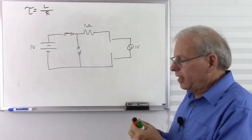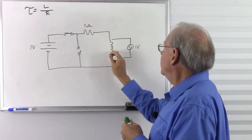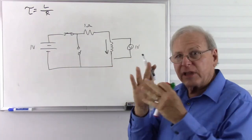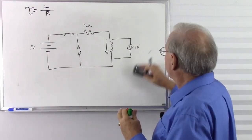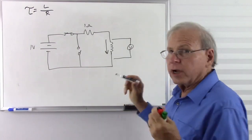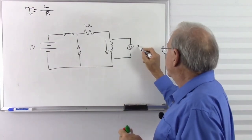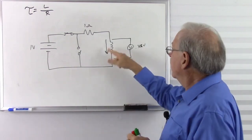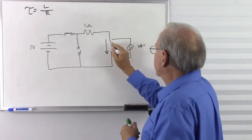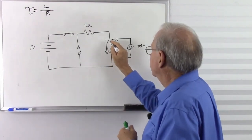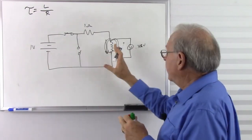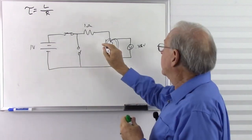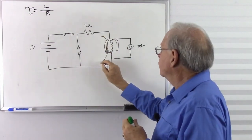With a voltmeter across the inductor at that moment, we get the full 1 volt — just like across any open circuit. There's no current, so no voltage drop across the resistor, and we have the full 1 volt across the inductor. As time goes by, the magnetic field begins to stabilize — it's no longer changing as rapidly — so current starts to flow and the back EMF voltage starts to drop.